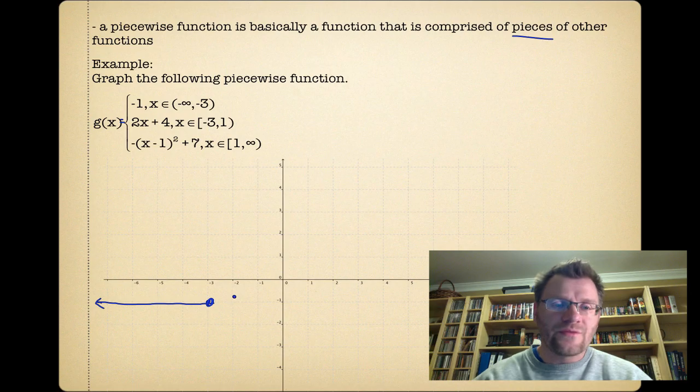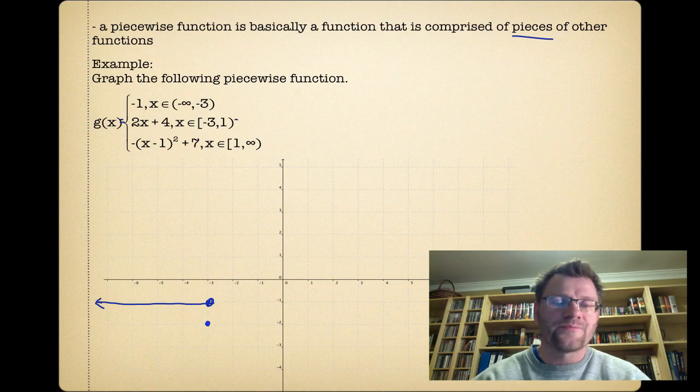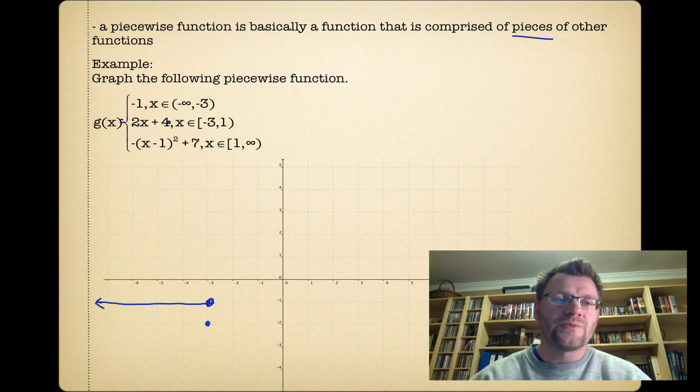So at negative three, it has a height of negative two. And that is a solid dot, because we have the square bracket. And if we plug in a one, we get two times one plus four, which is two plus four, which is six.